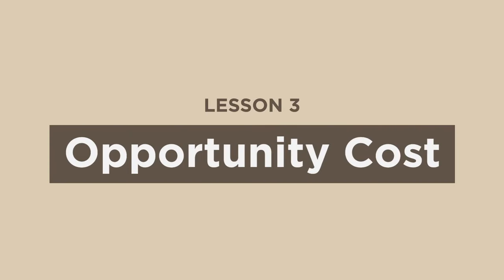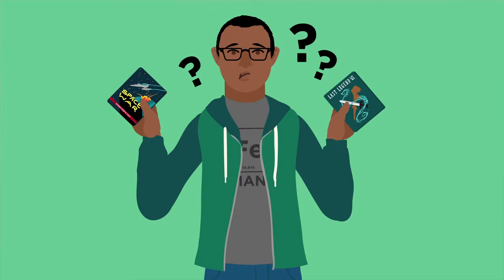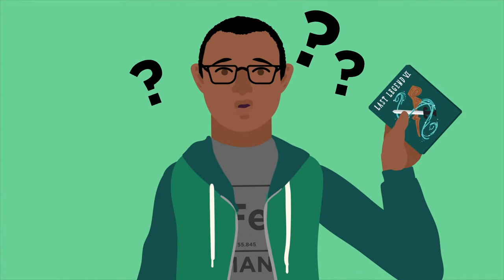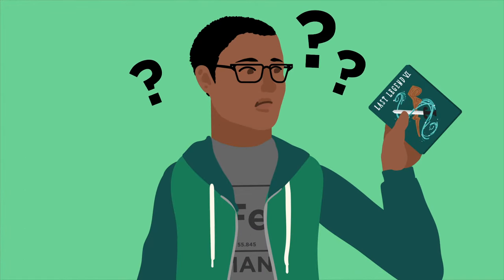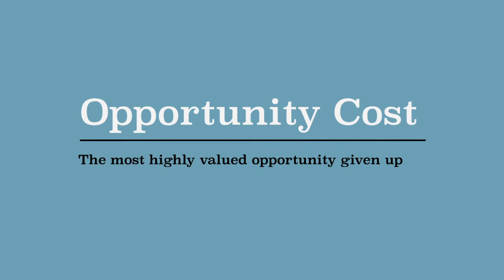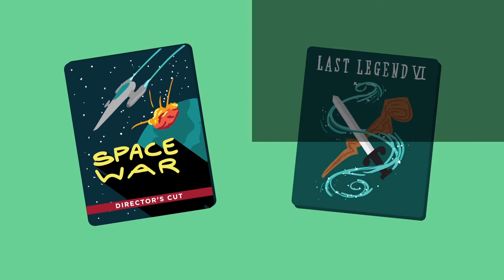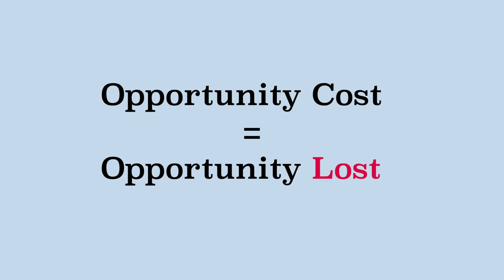Lesson 3: Opportunity Cost. When people make choices, they incur a cost. If you choose to buy a video game instead of a movie, there is a cost — not the price you pay for the video game, but opportunity cost. Economists define an opportunity cost as the most highly valued opportunity given up when you make a choice. So the opportunity cost of buying the video game is that you cannot buy the DVD. The opportunity cost is the opportunity lost.